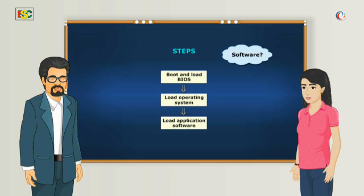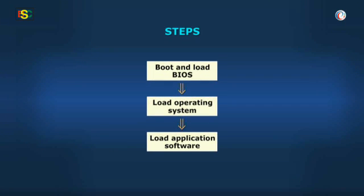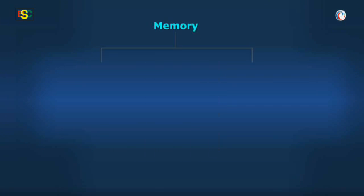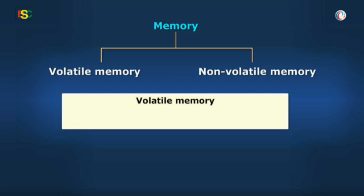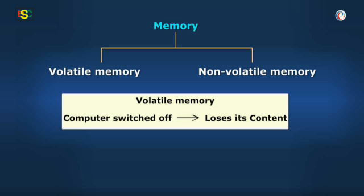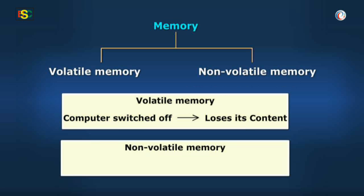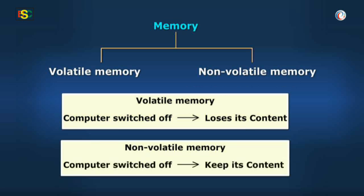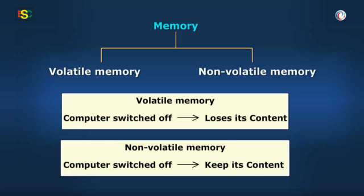You also mentioned that ROM is volatile — kindly explain further. Listen carefully: memory can be either volatile or non-volatile. Volatile memory is memory that loses its contents when the computer or hardware device gets switched off. Non-volatile memory is memory that keeps its contents even if the power is off.